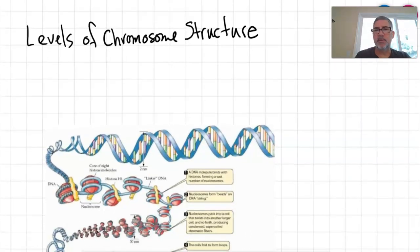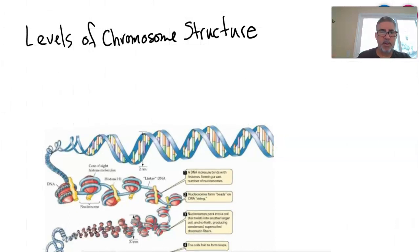So levels of chromosome structures, remember, this should be pretty easy for you. So remember, it starts with DNA. All right, so DNA would be the primary structure.